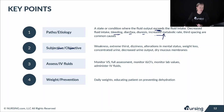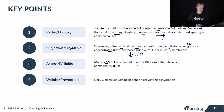For subjective and objective data, the patient could be complaining of weakness, extreme thirst, dizziness, alterations in mental status, weight loss, concentrated urine, decreased urine output, and dry mucous membranes. Interventions include monitoring vital signs, doing a full assessment, monitoring I&Os and lab values, administering fluids, doing daily weights, and educating the patient on preventing dehydration.